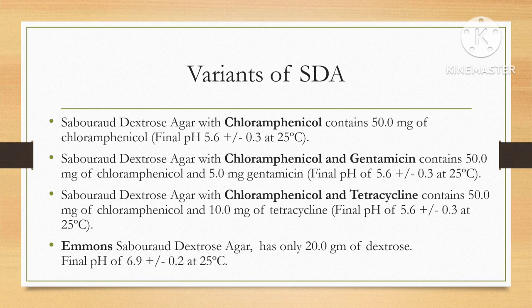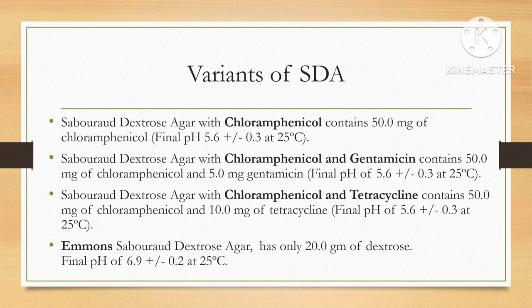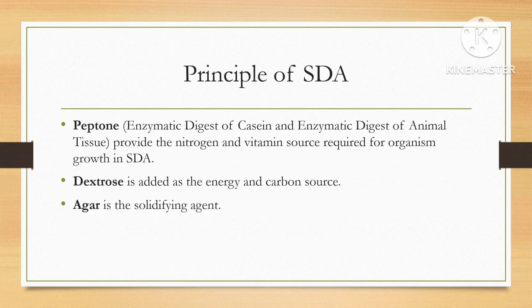There are different variants of SDA available in laboratories and on the market. These include SDA with chloramphenicol (50 mg, pH 5.6 ± 0.3), SDA with chloramphenicol and gentamicin (50 mg chloramphenicol and 5 mg gentamicin), SDA with chloramphenicol and tetracycline (50 mg chloramphenicol and 10 mg tetracycline), and Emmons SDA, which has only 20 grams of dextrose and a final pH of 6.9 plus or minus 0.2 at 25 degrees Celsius.